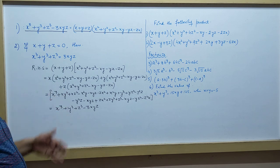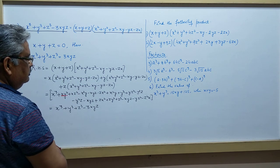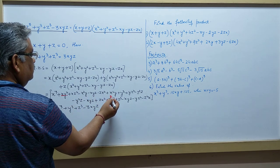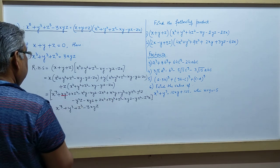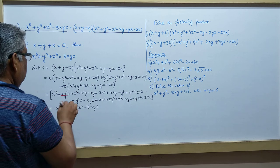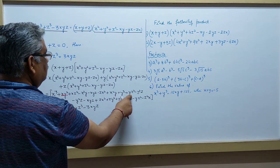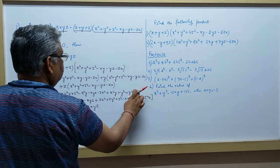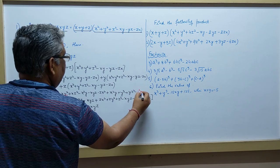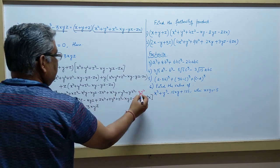सिर्फ यही terms बचेंगे। On all questions आपको यह steps लगाने की जरूरत नहीं है — this is only one time to understand the concept of how we are getting it. एक बार समझ लेते हैं: जैसे xy² है — आप देखेंगे यहां पर एक्स y² कहीं न कहीं होना चाहिए था। जब y से multiply करेंगे तो x²y आएगा, xy² आएगा और यह term इस term से cancel हो जाएगी।